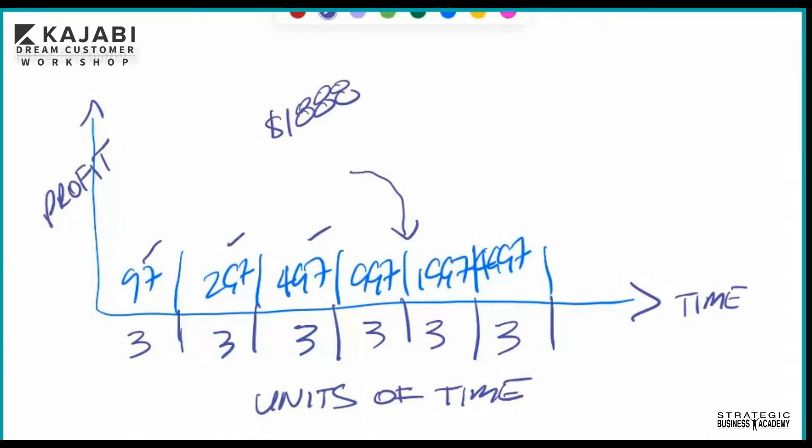This would take you 12 months to do it – three months, three months, three months, 12 months total. If you focused only three months on your premium dream client, you're already making more money. In either case, if you did $1997 or $4997.